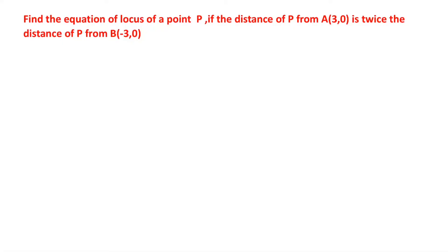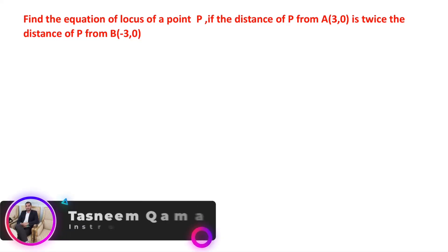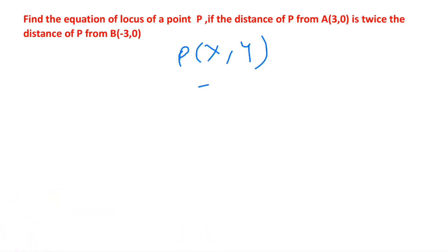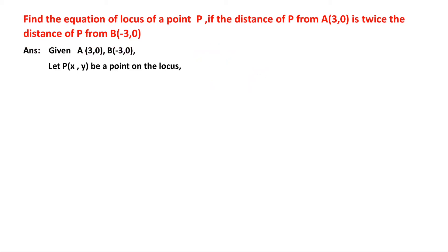Find the equation of locus of a point P if the distance of P from A(3,0) is twice the distance of P from B(-3,0). Two fixed points A(3,0) and B(-3,0) are given. Let us consider P as (x, y). We need to find the locus of this point. The condition given is that the distance of P from A is twice the distance of P from B.